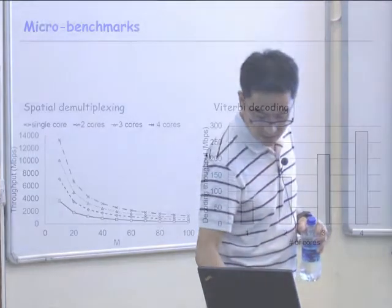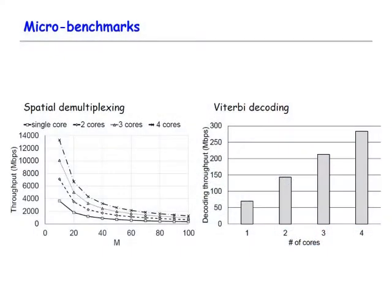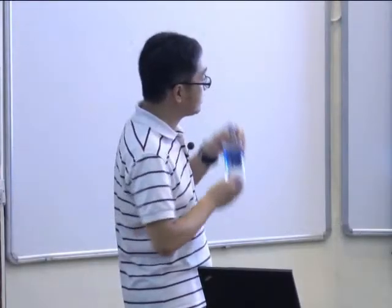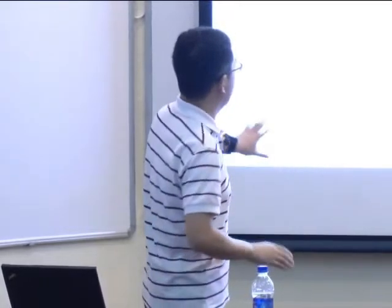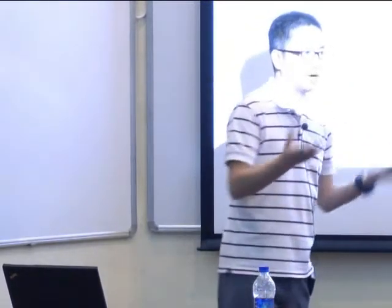Q&A: In slide 39, throughput decreases as M (number of antennas at the access point) increases because more antennas require more computation for demultiplexing — so you can process fewer packets per second with more antennas.